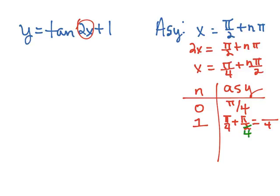Make this a common denominator 4, that would be 2π over 4. So we would end up with 3π over 4.